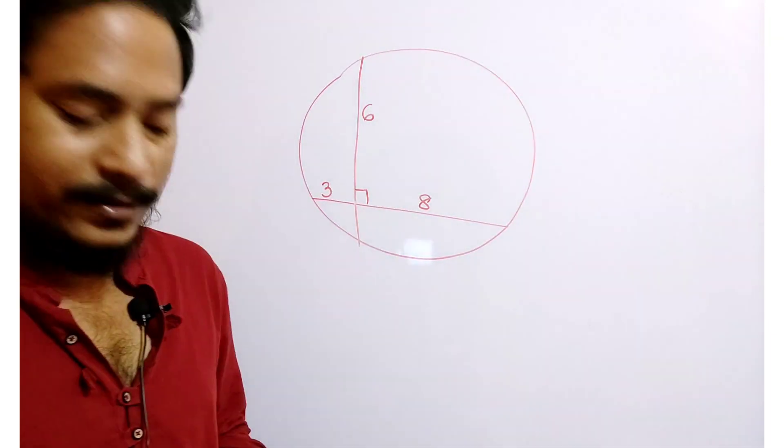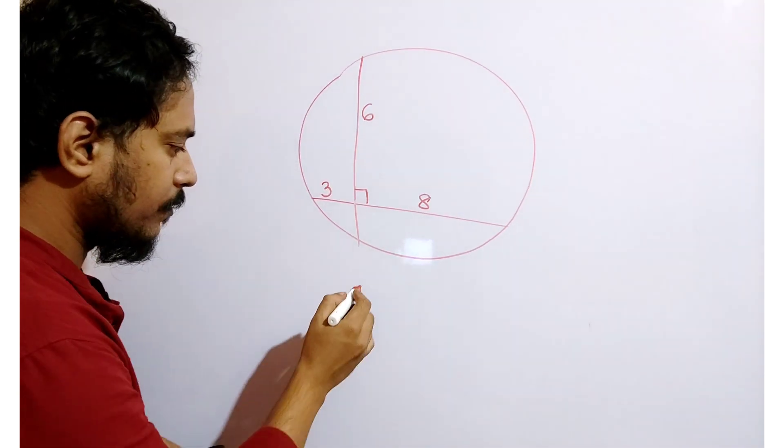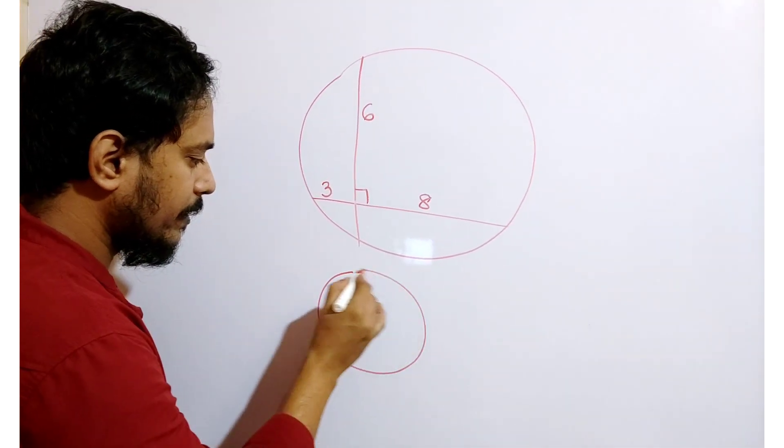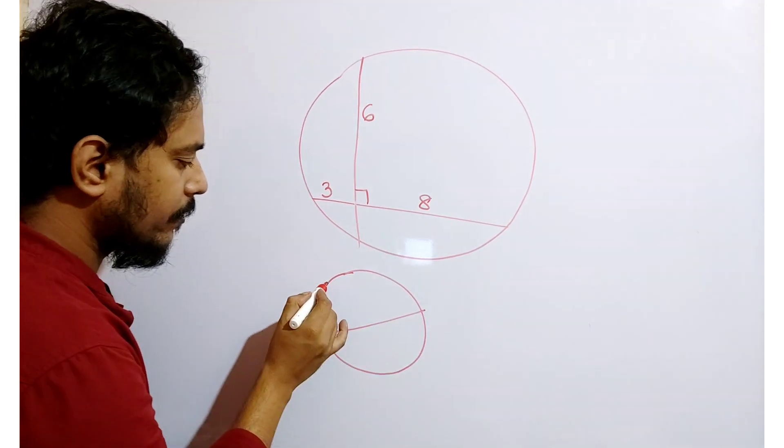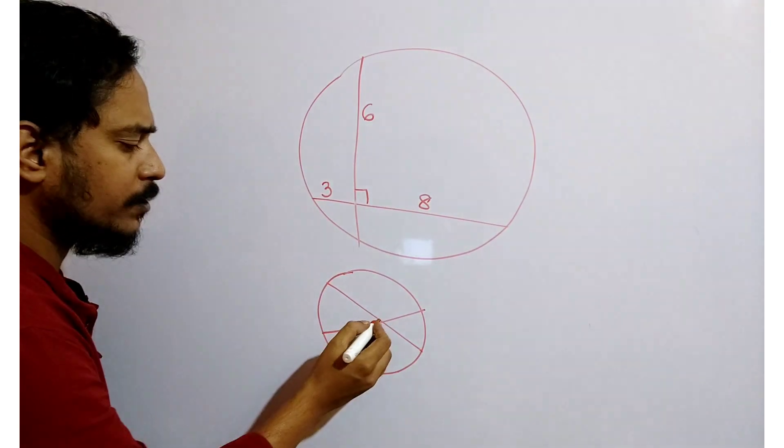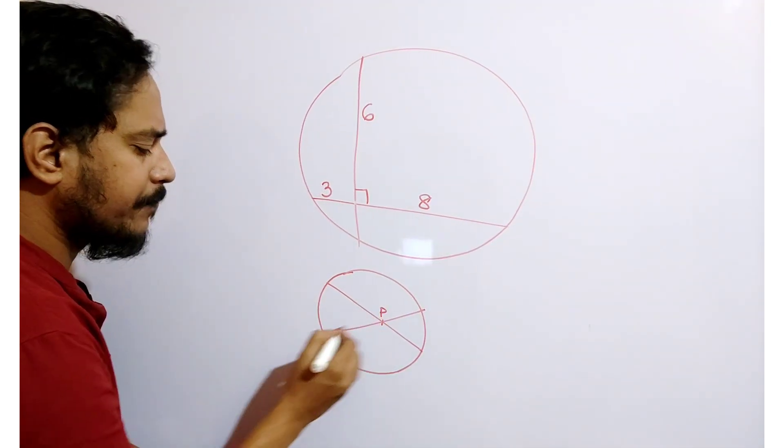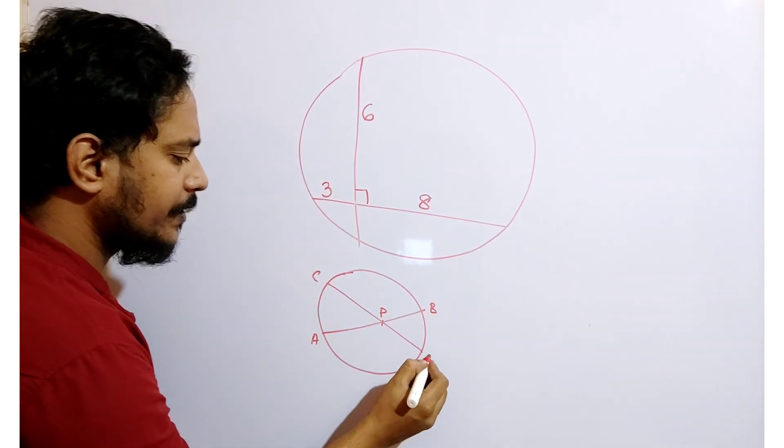Let's start to solve this question. In a circle, inside the circle two chords intersect at P. This chord is AB, this chord is CD.